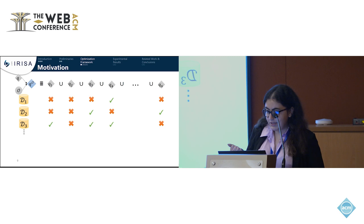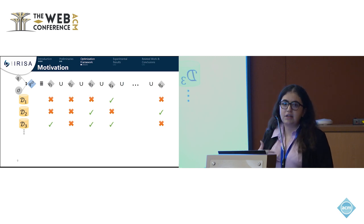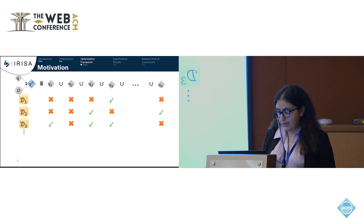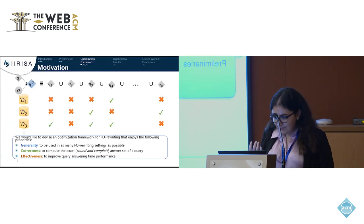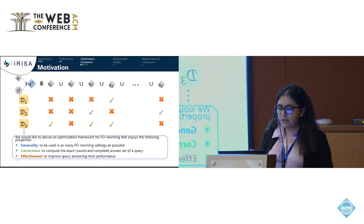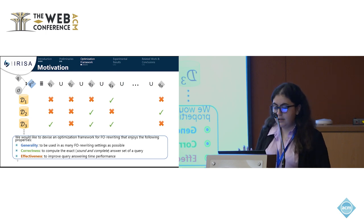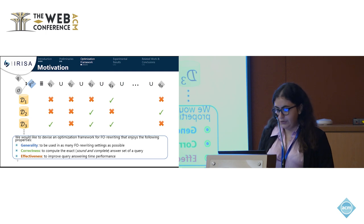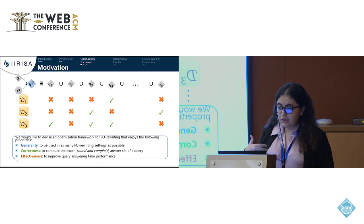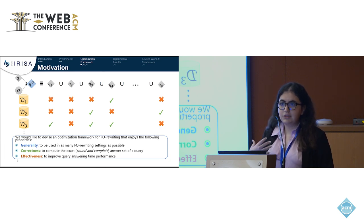For database D3, Q1, Q3, and Q4 return answers. So what we would like to do is eliminate as many of these empty subqueries as possible from our union — to produce a query contained in this union that returns the same answers, and to do it in an efficient way that improves the time performance.